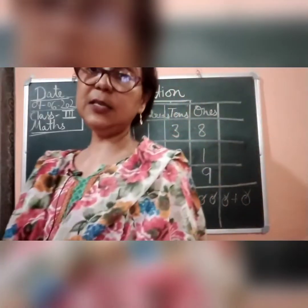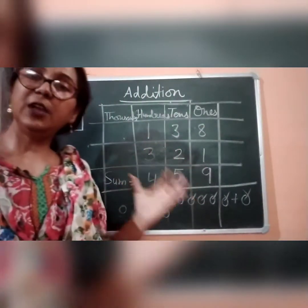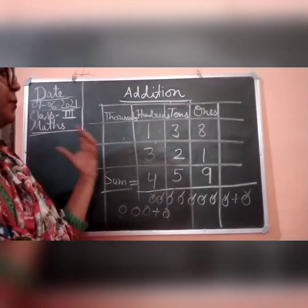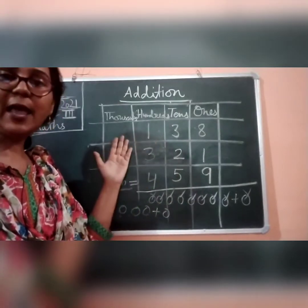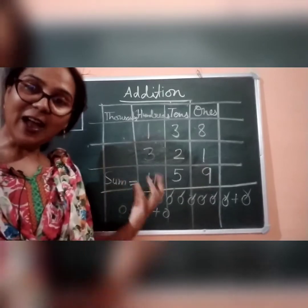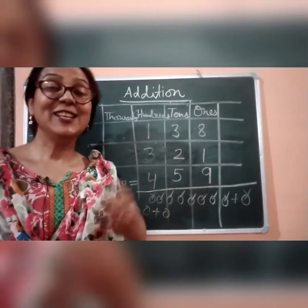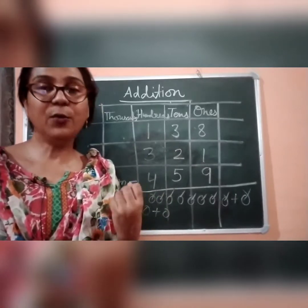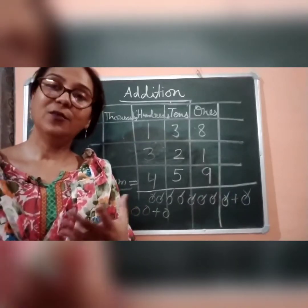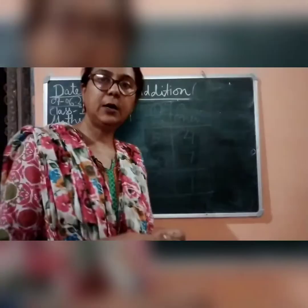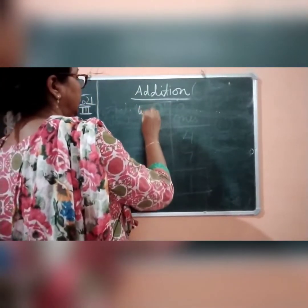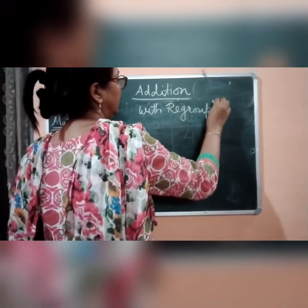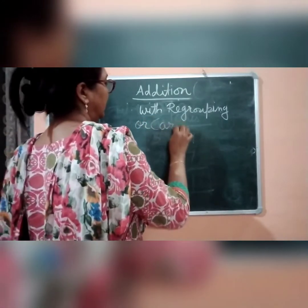So this is three-digit addition without carrying. We have revised the one-digit, two-digit, and three-digit number additions. We have also revised place values: ones, tens, hundreds, thousands, and so on. Now we should start our topic for today's class, which is addition with regrouping — without regrouping and with regrouping — or you can say carryover.